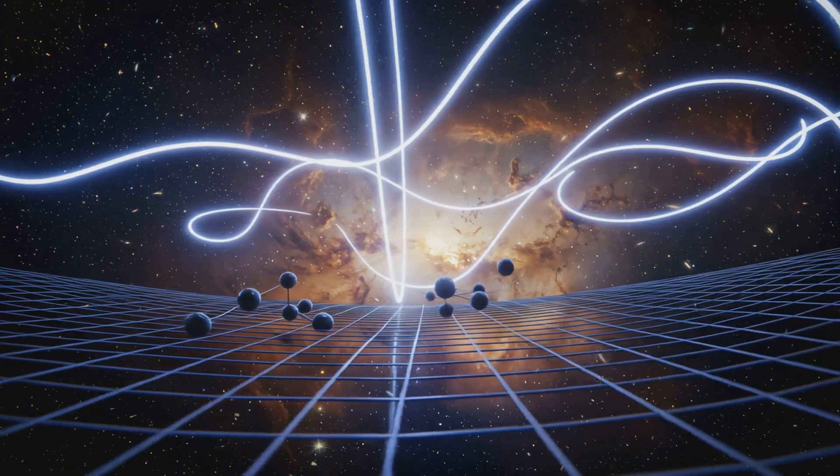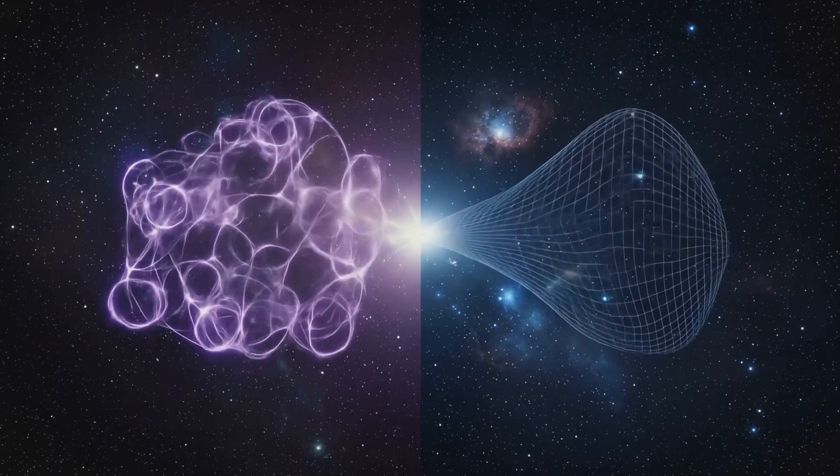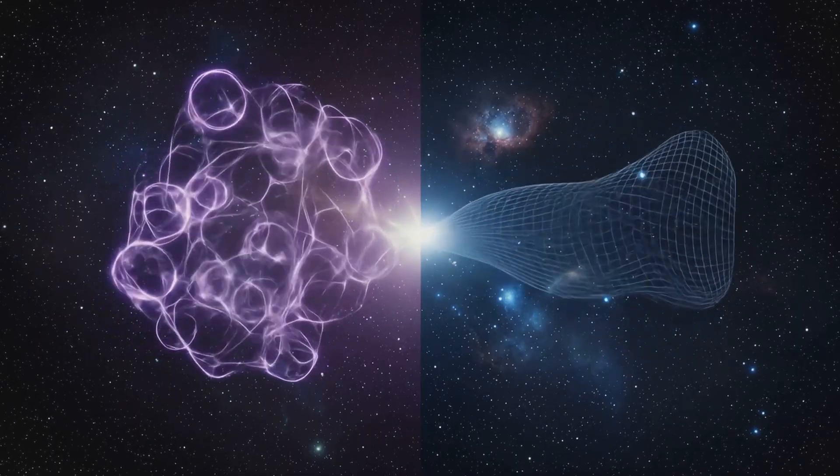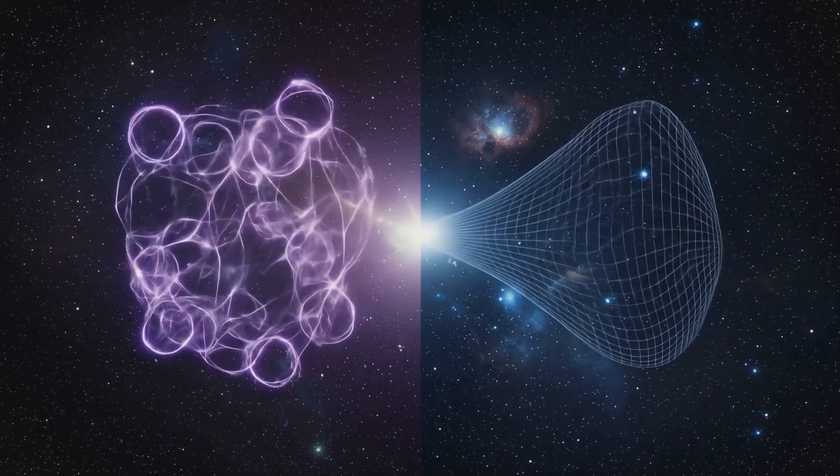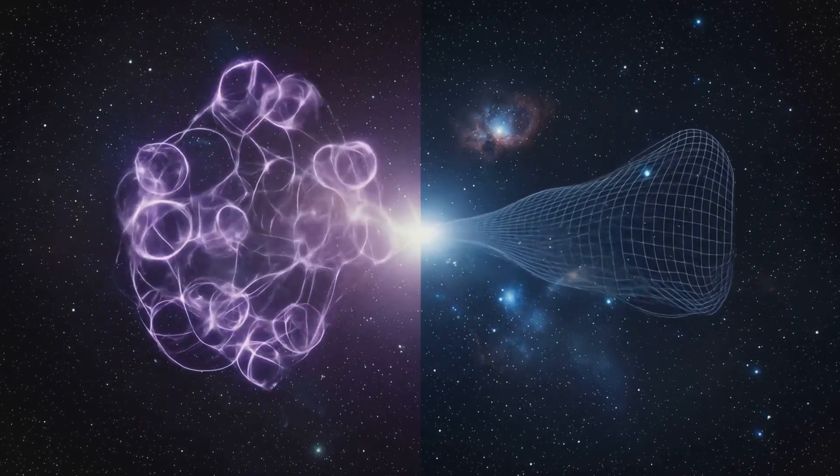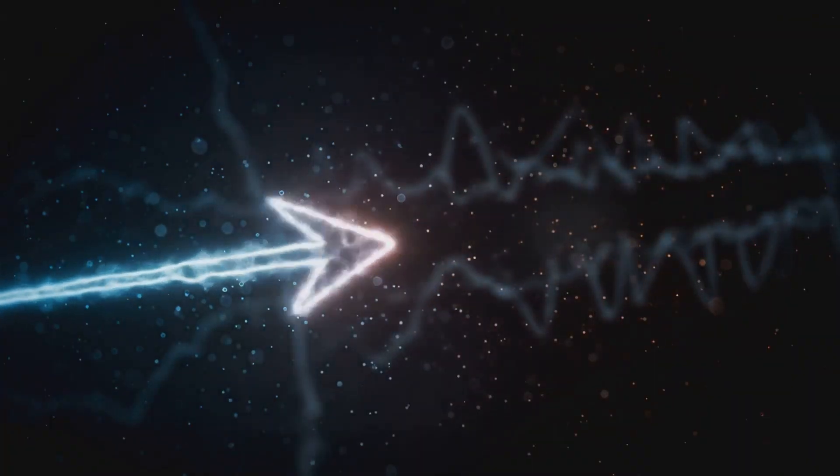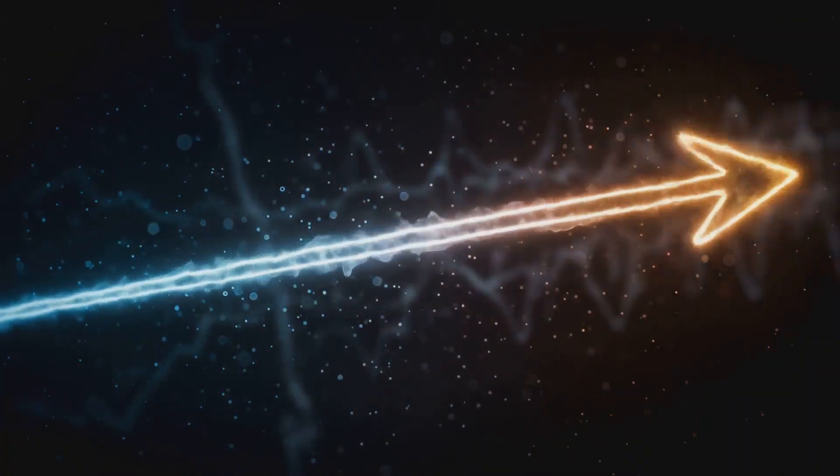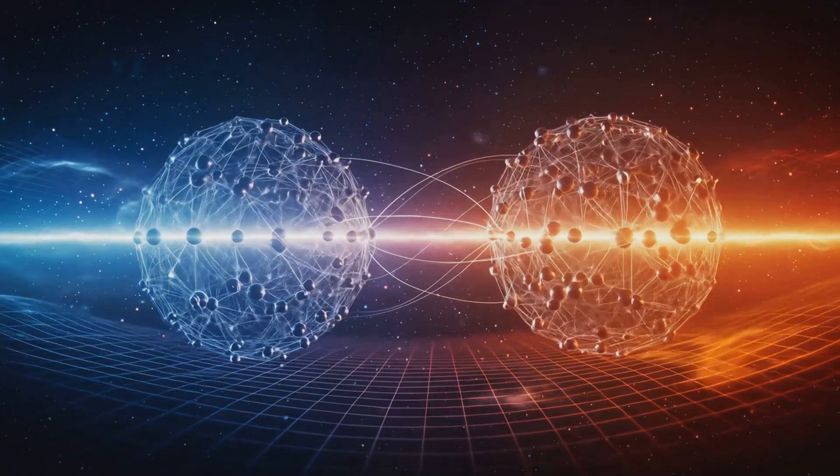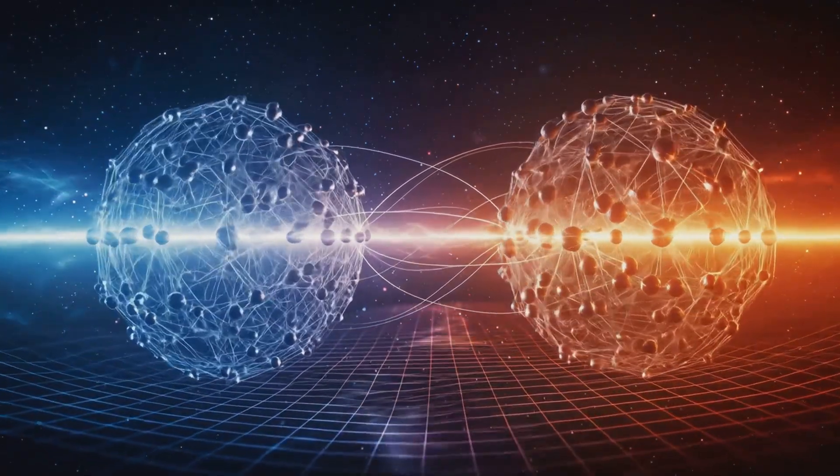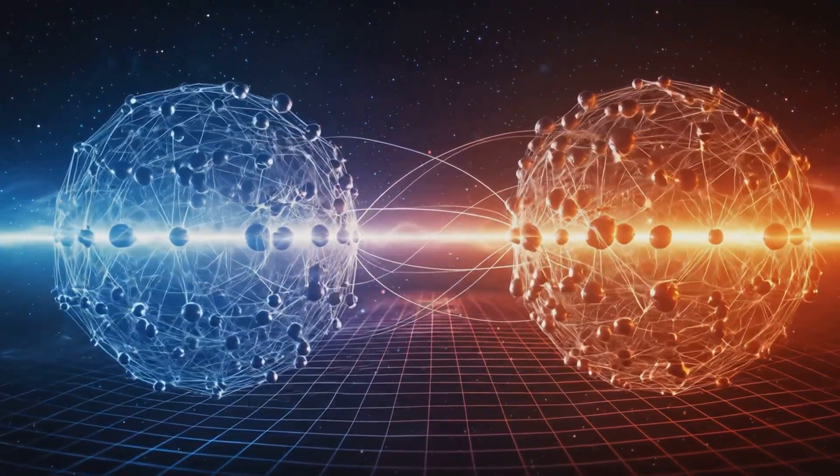Entanglement does not bend. It connects. Curvature arises when these straight line connections are viewed from inside the projection. What appears bent is a straight line rendered from within a limited frame. The more strongly two qubits are entangled, the greater the curvature of the space between them. The strength of entanglement is spacetime curvature.